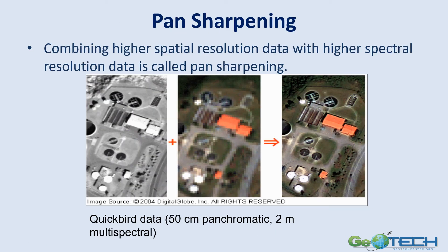Another technique is to combine spatial resolution data with higher spectral resolution data — it's called pan-sharpening. This example uses a QuickBird 50-centimeter panchromatic image and a 2-meter multispectral image. Each one separately is pretty good, but combining the two gives you a very good view of that image area.